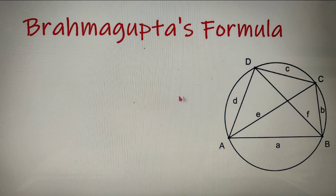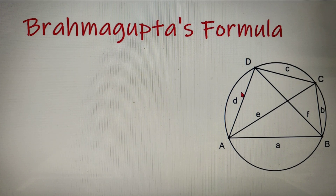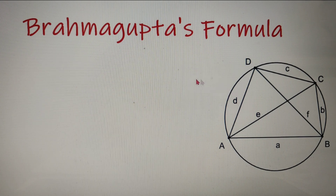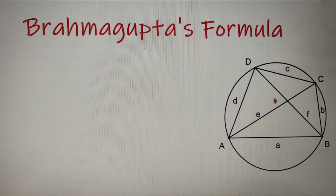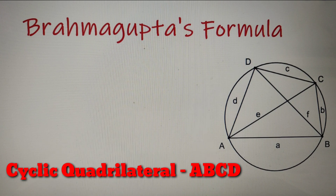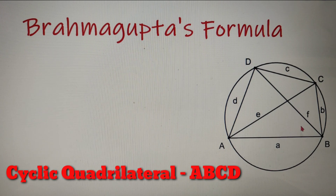Before learning the formula for finding out the area of a cyclic quadrilateral, let us first discuss what a cyclic quadrilateral actually is. A cyclic quadrilateral is also known as a concyclic quadrilateral. A quadrilateral that is inscribed in a circle is called a cyclic quadrilateral. Over here you can see that we have a circle and inside of it we have a quadrilateral inscribed, ABCD.